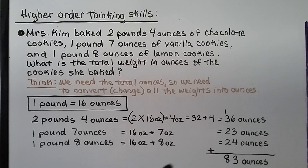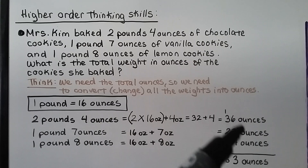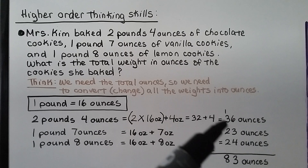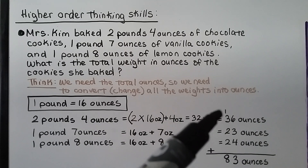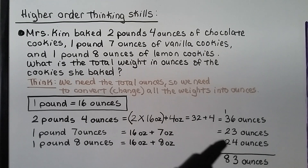Now we add all the ounces: 36 + 23 + 24. We can use friendly numbers — 6 + 4 = 10, plus 3 more is 13, regroup the one and put the three down. Then 3 + 1 = 4, 5, 6, 7, 8. The total is 83 ounces.